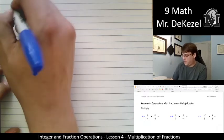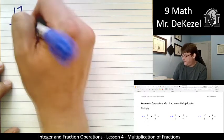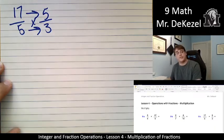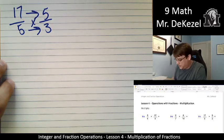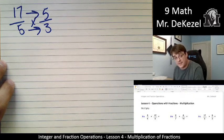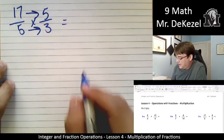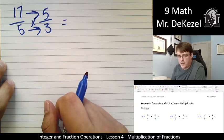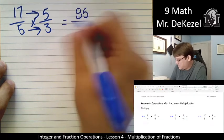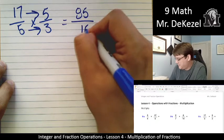Next one. We have 17 over 5 times 5 thirds. Again, we are going to multiply the top and we are going to multiply the bottom. We just did 5 times 17, so 17 times 5 is the same. Let me try to remember. 85, I do believe, was our answer. 85 over 5 times 3 is 15.